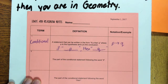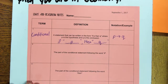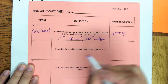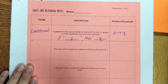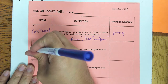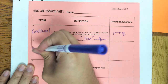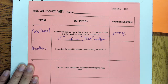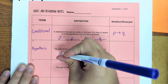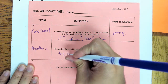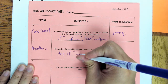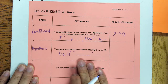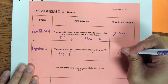Now let's look at the different parts of a conditional statement. The part of the conditional following the word 'if' we call our hypothesis. Just like in science, where at the beginning of an experiment you start with your hypothesis, at the beginning of our conditional statement we start with the hypothesis. It's the 'if blank' part. In our notation, that's the P.